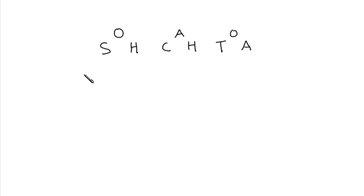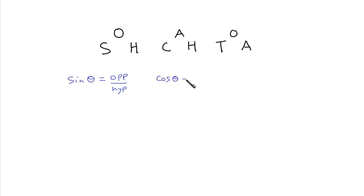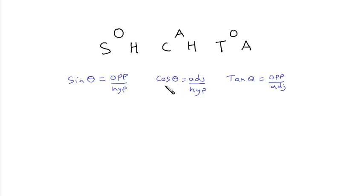Remember: sine of the angle — whatever angle we're interested in — equals the opposite over the hypotenuse. The cosine of the angle equals the adjacent over the hypotenuse. And the tangent of the angle equals the opposite over the adjacent. This symbol used for the angle is called theta — it's a Greek letter often used to represent angles, so you might see it in different questions.